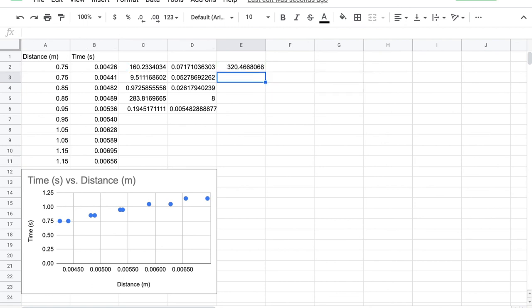That is pretty good, 320 meters per second. And I'm going to multiply this second value by 2 to get my estimate of the error.